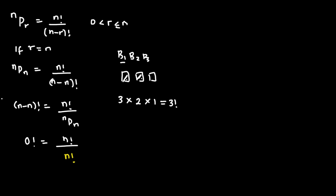That means our denominator is n factorial. And what is n factorial divided by n factorial? This gives us 1. That means zero factorial equals 1.